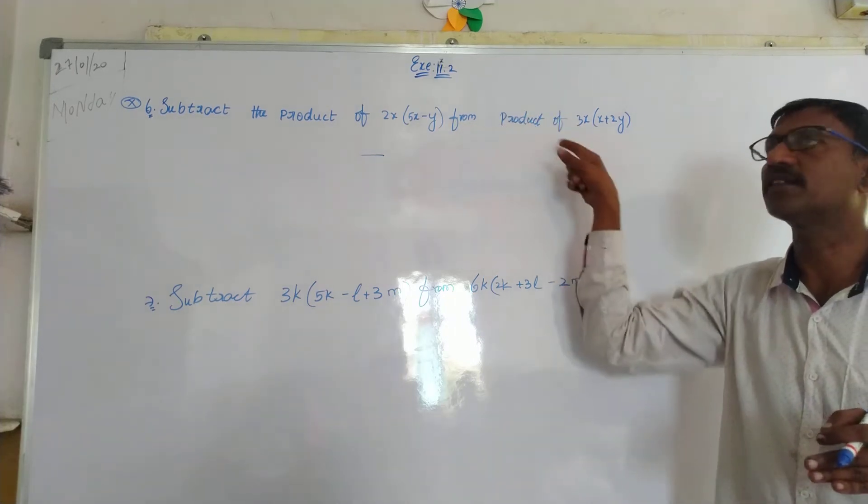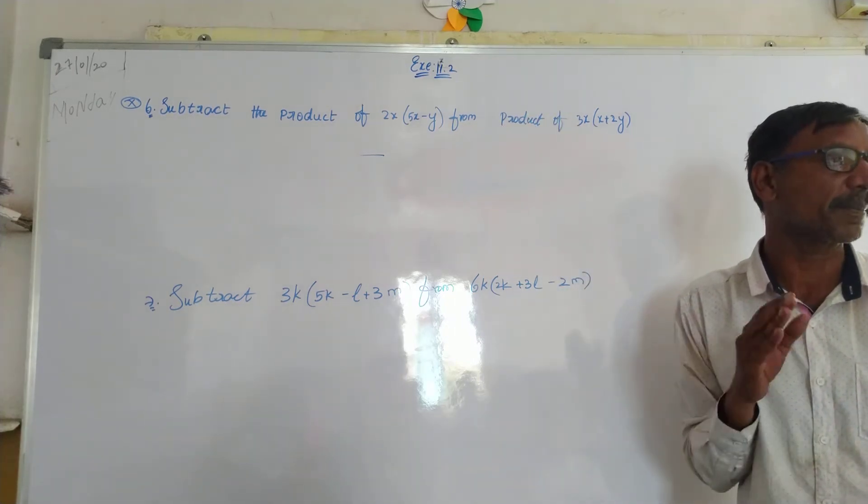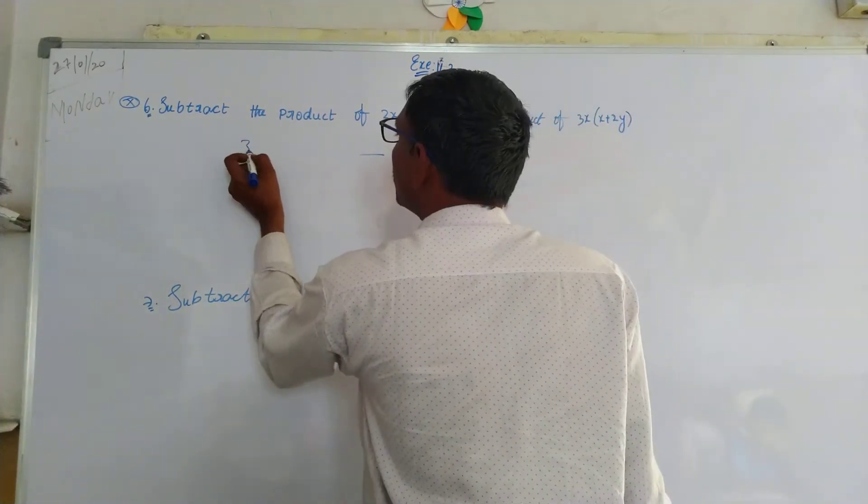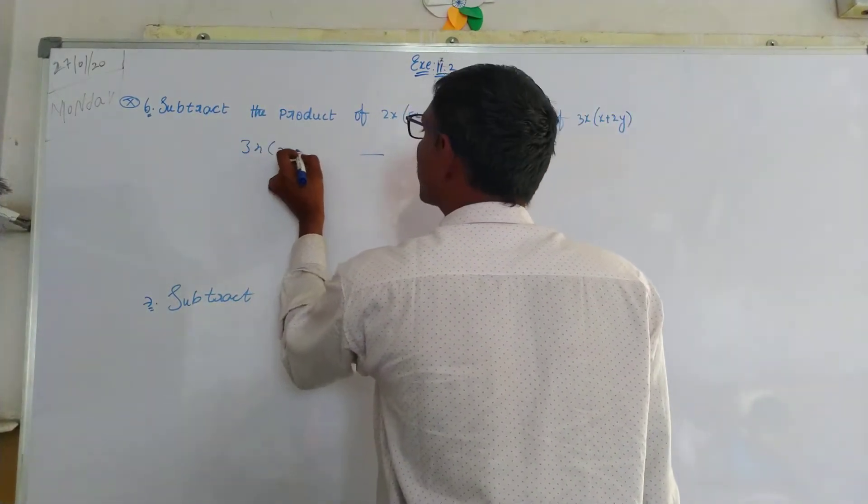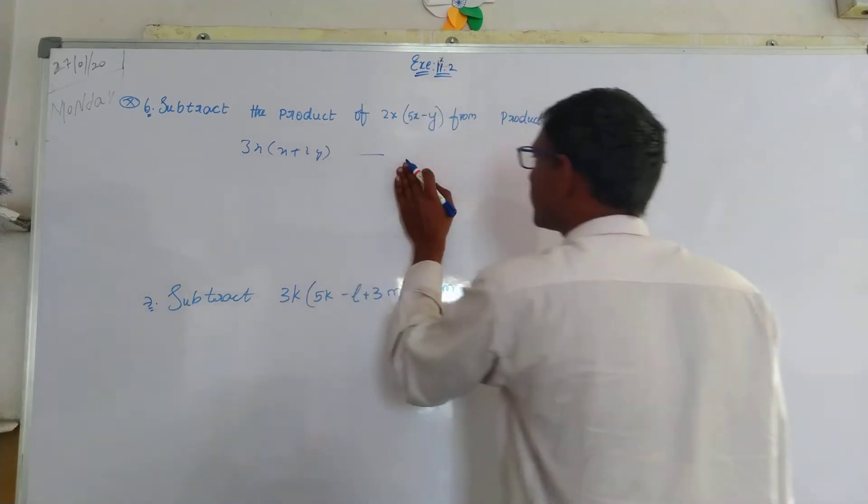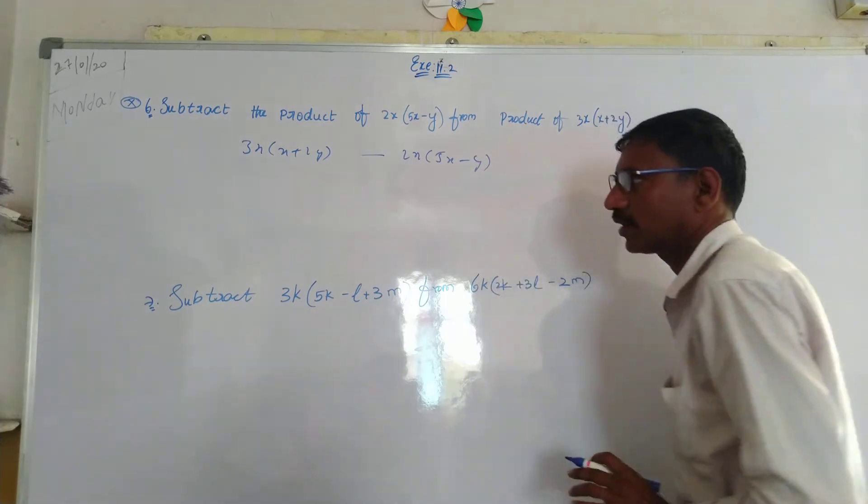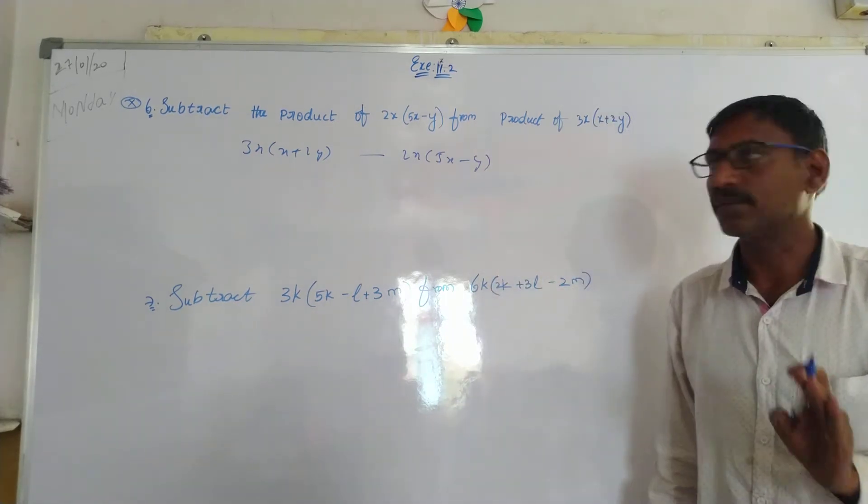2x into 5x minus y is subtracted from this product: 3x into x plus 2y minus 2x into 5x minus y.